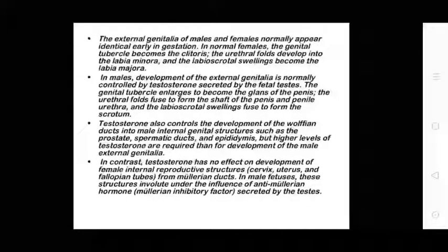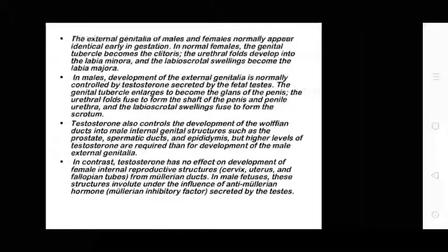The urethral folds fuse to form the shaft and penile urethra, and the labioscrotal swellings fuse to form the scrotum. Testosterone also controls the development of the Wolffian ducts into male internal genital structures such as the prostate, spermatic ducts, and epididymis, but higher levels of testosterone are required than for external genital development. In contrast, testosterone has no effect on the development of female internal reproductive structures — cervix, uterus, and fallopian tubes — which form from the Müllerian ducts.